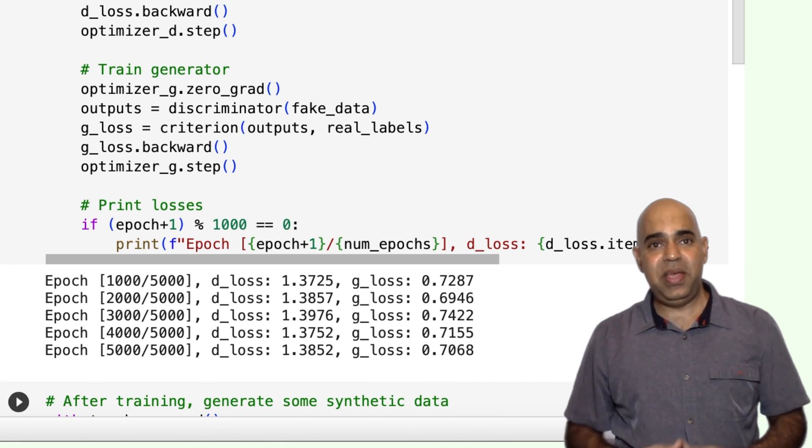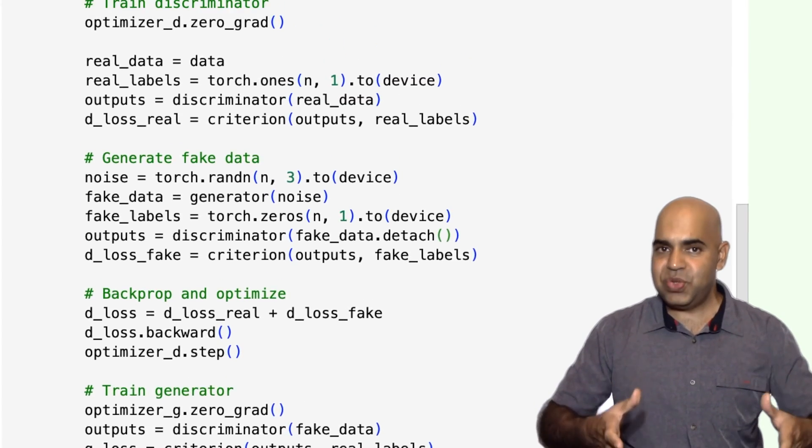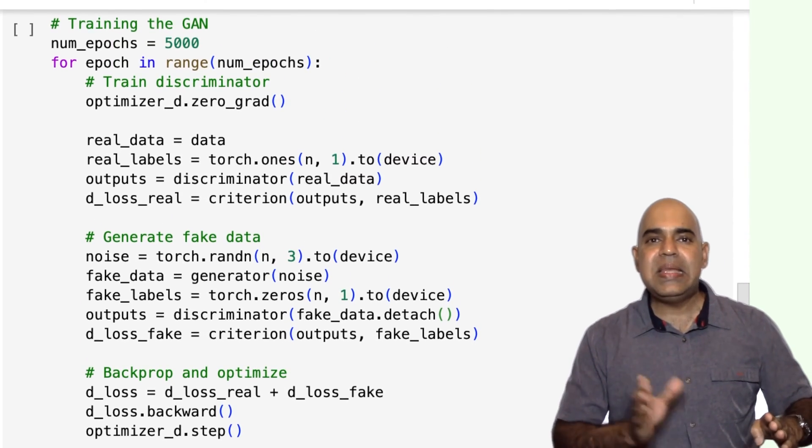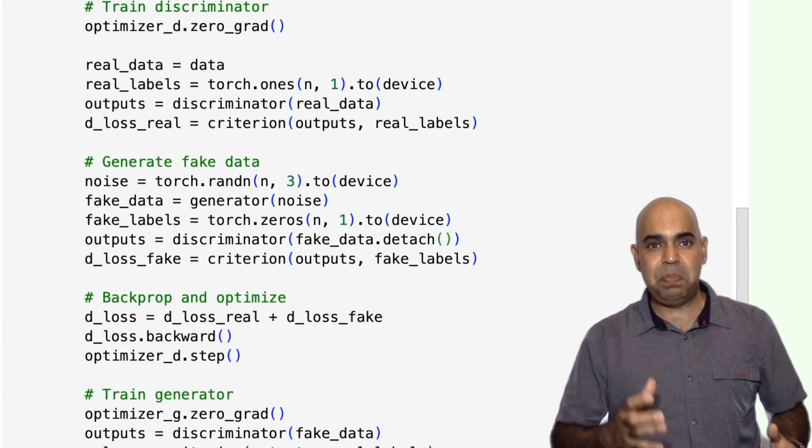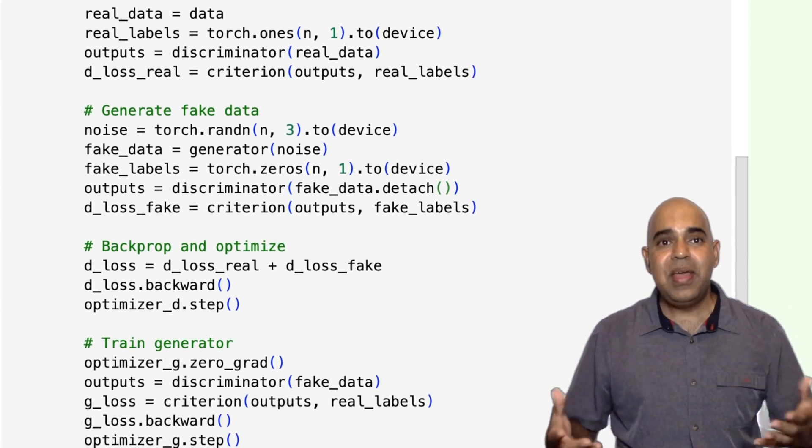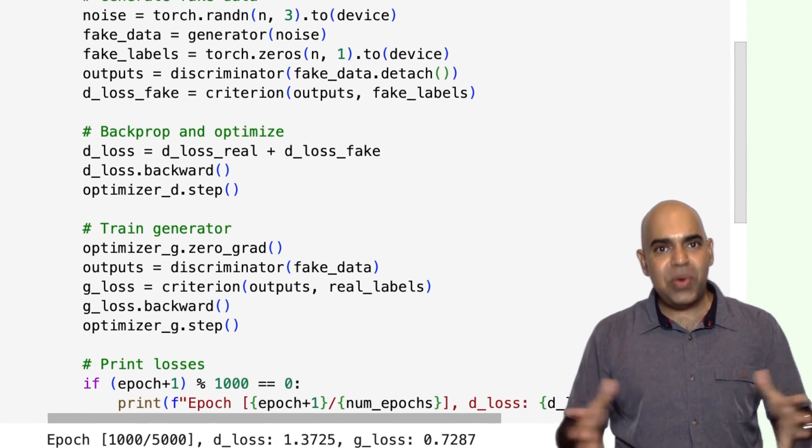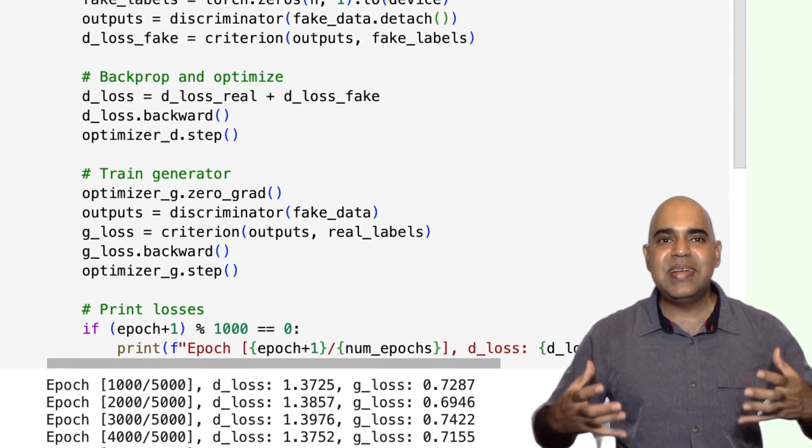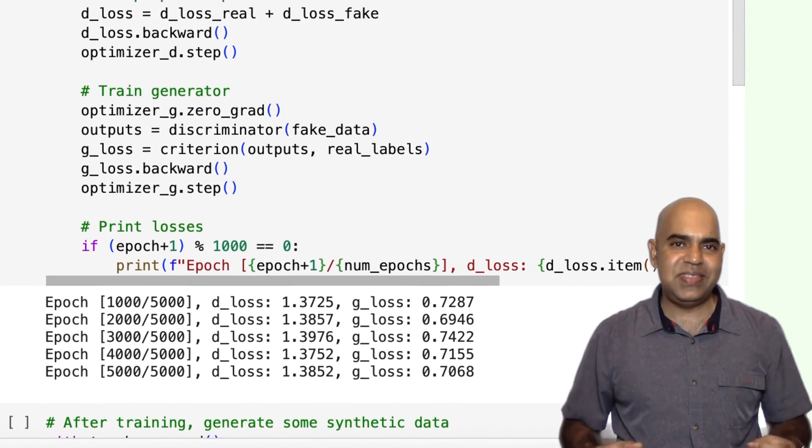While the discriminator tries to get better at distinguishing between real and fake data. Over iterations, both models improve, resulting in a generator that produces increasingly convincing data.